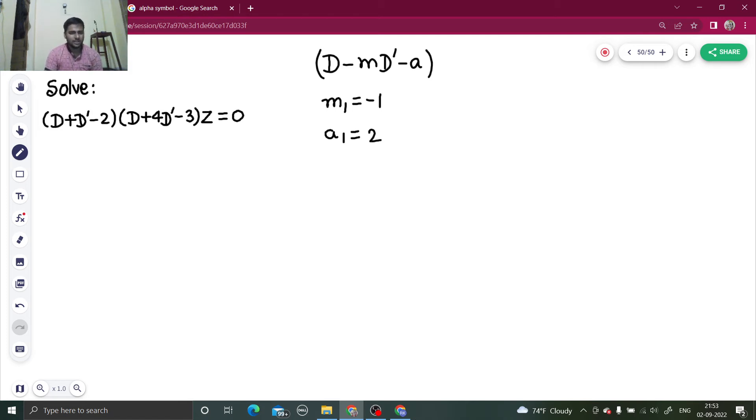Similarly, looking at the second factor, I can say that my m2 is minus 4 because you will compare plus 4 with minus m, and your a2 is simply 3.